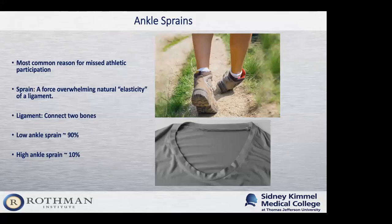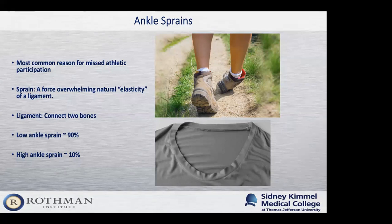We'll start with ankle sprains. Ankle sprains are really one of the most common things we see and are the most common reason for missed athletic participation. A sprain is basically a force or injury that overwhelms the natural elasticity of ligaments. Every ligament, which connects two bones, has a degree of stretch to it, and when we overwhelm that by twisting our ankle, this results in a sprain. I use the example of a shirt collar — when you get it new, it's tight and elastic, but if you really yank on it, it never gets back to normal. You end up with a wrinkled collar, and that's kind of what a sprain is.